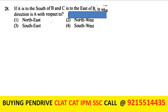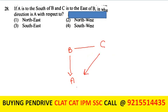A is to the south of B, and C is to the east of B. The direction of A with respect to C is south-west. The fourth option is the answer.